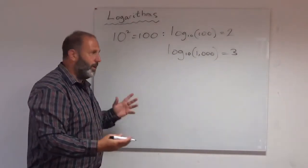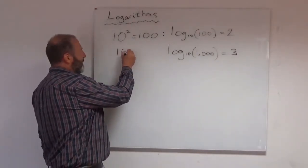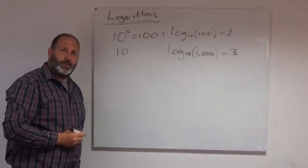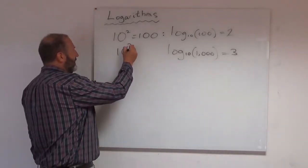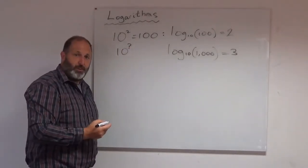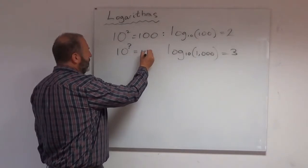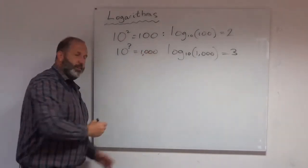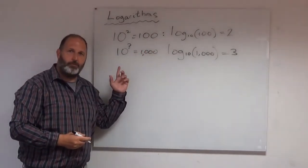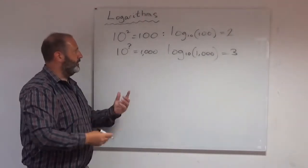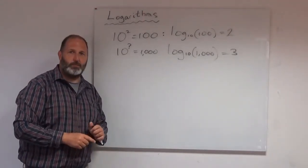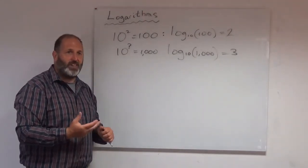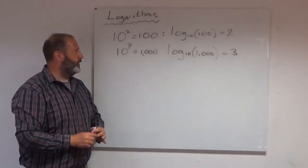If the numbers weren't quite so nice, you might have thought, perhaps, well, I'm happier with powers. Let me write it this way and see if I can work it out. So you might have said, 10 to the power of something is equal to 1,000. And then try and work that out. So I'm trying to show you the relationship between logarithms and powers. And say, if you understand powers, then you're really there with logs.